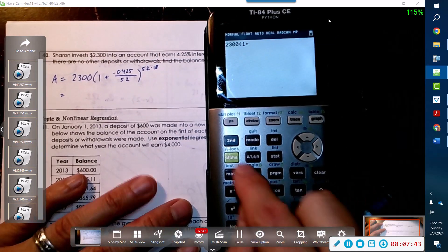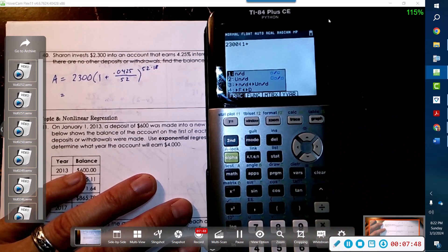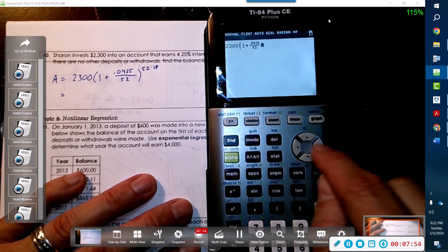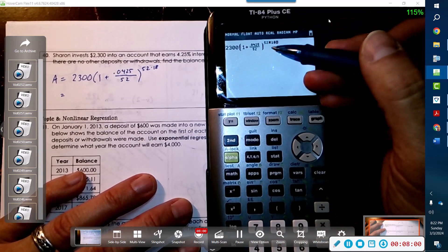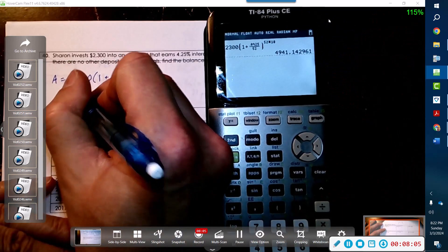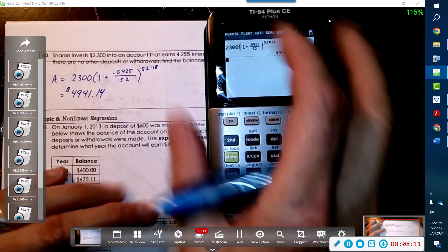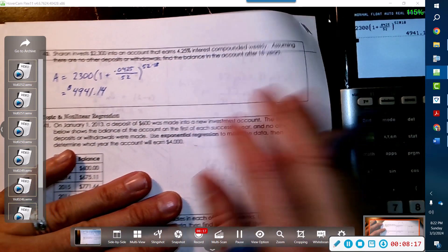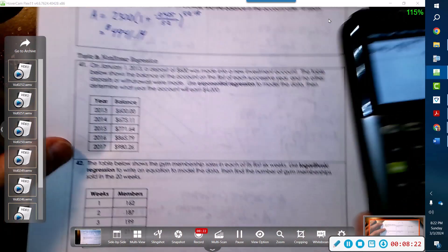We can type it exactly as we see it - we can even type it in with the fraction right there. This allows us to not even worry about the order of operations because we're just typing exactly as we see it. We will have $4,941.14. Is that reasonable? Yeah, 18 years for sure. That's reasonable.